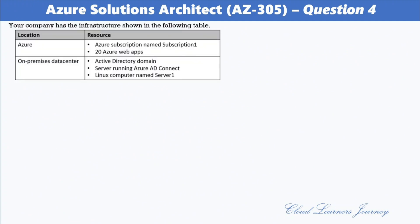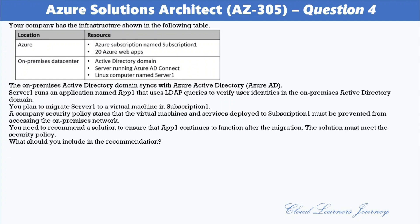Question number four: Your company has infrastructure including Azure subscription one with 20 Azure web apps, and an on-premises data center with an Active Directory domain, a server running Azure AD Connect, and a Linux computer named Server1. Server1 runs an application named App1 that uses LDAP queries to verify users in the on-premises Active Directory domain. You plan to migrate Server1 to a virtual machine in subscription one. A security policy states that VMs in subscription one must be prevented from accessing the on-premises network. You need to recommend a solution to ensure App1 continues to function after the migration while meeting the security policy.